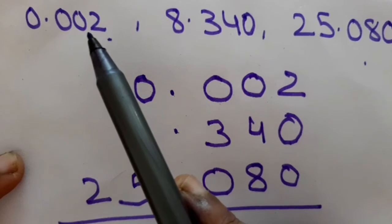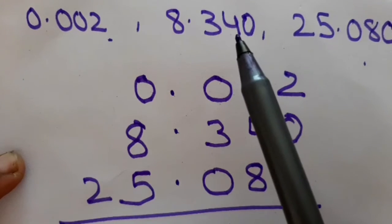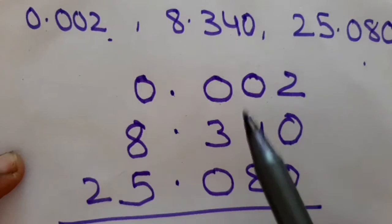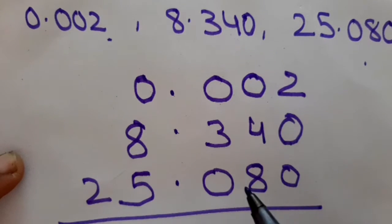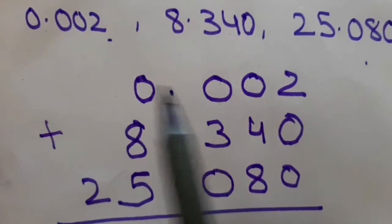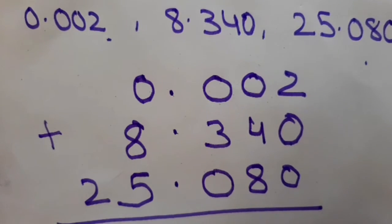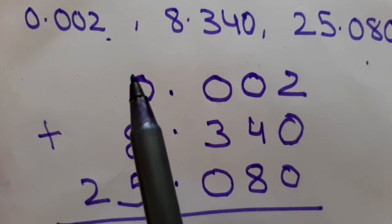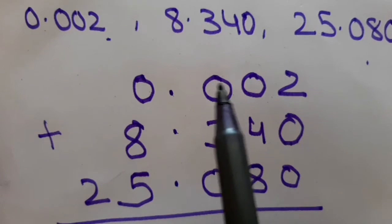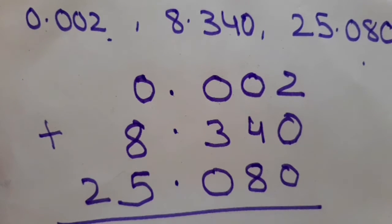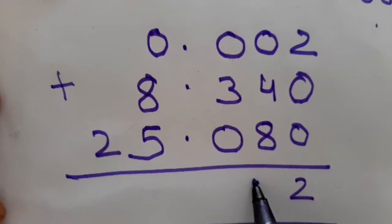Similarly, 0 is the hundredths place in the first number, 4 is the hundredths place in the second, and 8 is the hundredths place in the third — so they are all in the same column. The rest of the addition is simple. Convert to like decimals, arrange in columns: decimal under decimal, ones place under ones place, tenths under tenths, hundredths under hundredths, and so on.